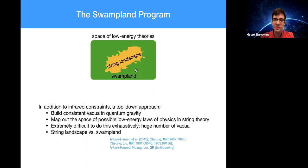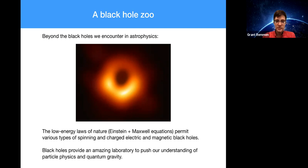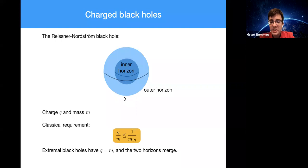One of the most important conjectures from the swampland program is the weak gravity conjecture — a way of characterizing what laws of physics are consistent with quantum gravity — which helps explain why gravity is the weakest force in our universe and why it had to be the case. We'll be doing thought experiments with charged black holes. The low energy laws — Einstein plus Maxwell's equations — permit various types of spinning and charged black holes. For non-spinning charged black holes, the Reissner-Nordström solution has an inner horizon and outer event horizon, characterized by charge and mass. Classically, the charge-to-mass ratio can't exceed 1 over the Planck mass, at which point the two horizons merge, giving the extremal black hole where Q equals M.